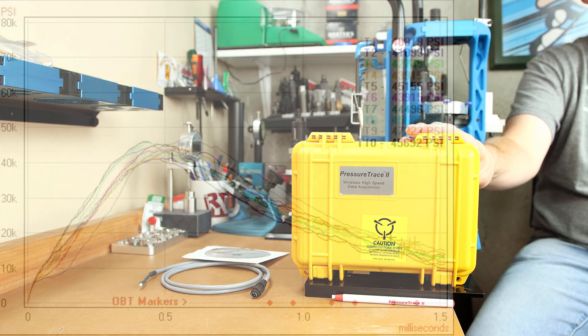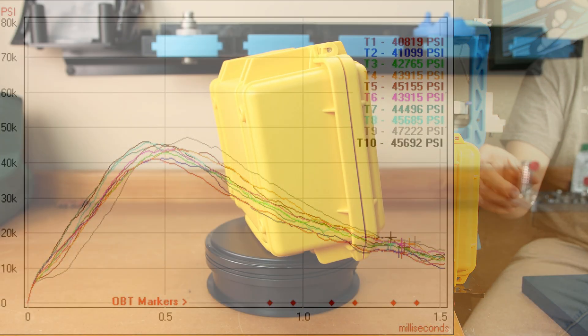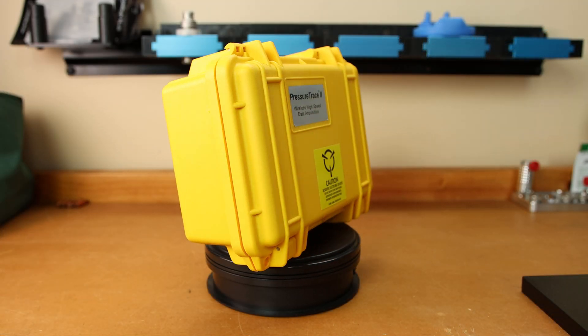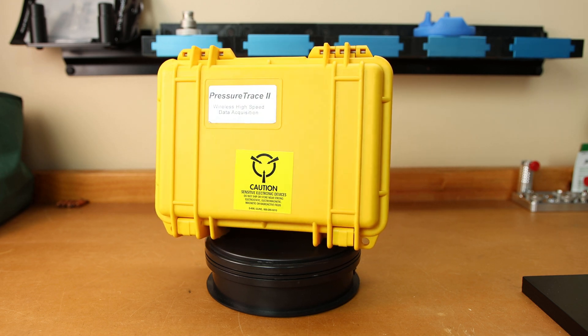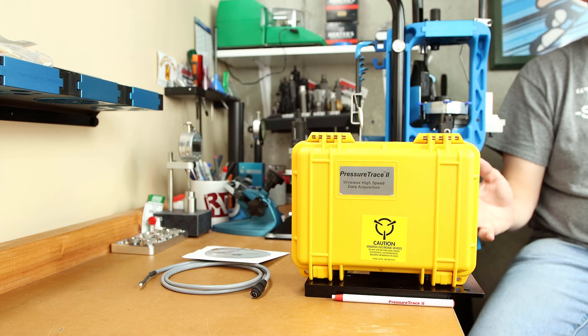In this yellow box is a piece of equipment that's going to give us more information in our reloads than we've ever been able to generate before. Today we're going over the Pressure Trace 2 system. I'm going to do my best to explain what this is good for, what it might not be good for, and show you some data that we generated with it.